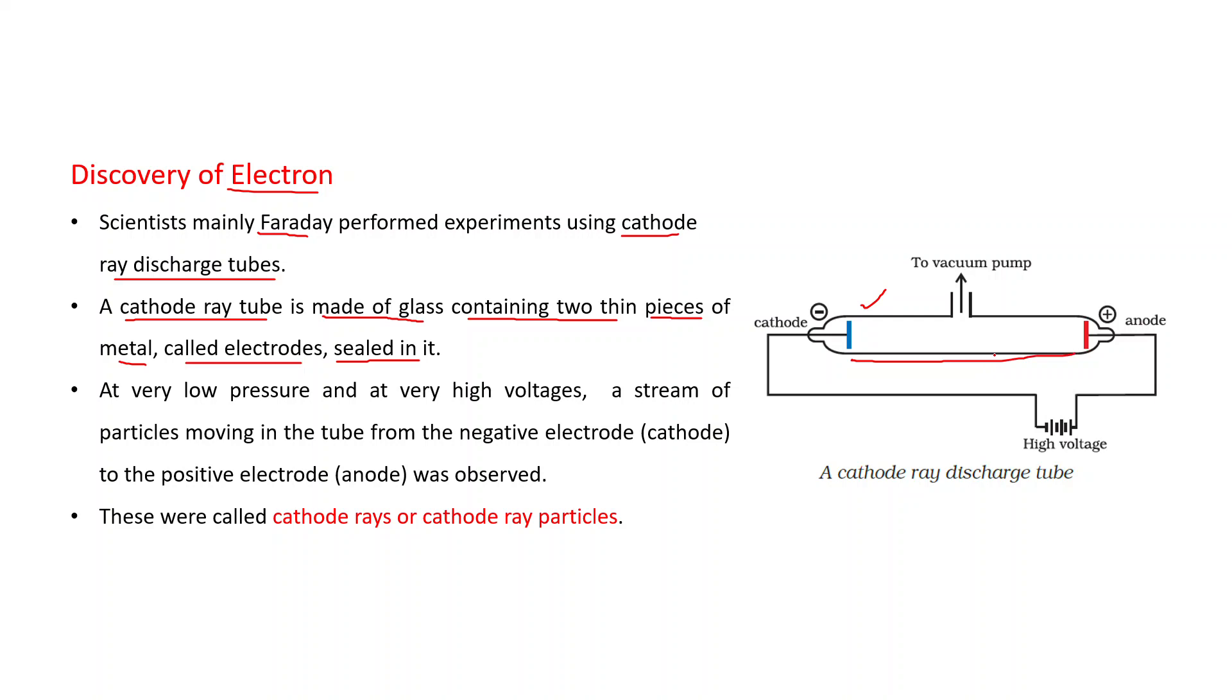This is one tube at one end. This is the electrode cathode. This is another end, another electrode that is anode. These anode and cathode are linked to the external source of energy. This is high voltage source of energy and this goes to the vacuum pump. With the help of this, the pressure in this tube can be managed.